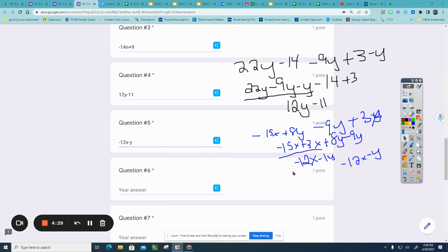Question number 6 is 12a minus 9b minus 7a plus 6b. I'm going to rearrange it, 12a minus 7a minus 9b plus 6b. So combining these, 12 minus 7 is 5a.